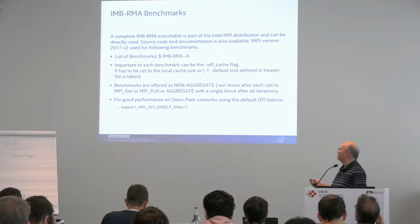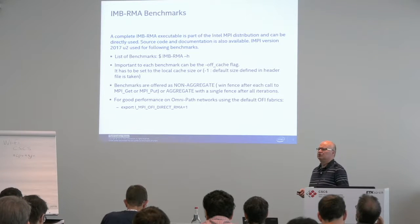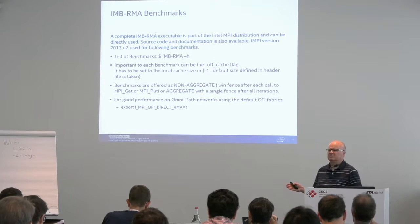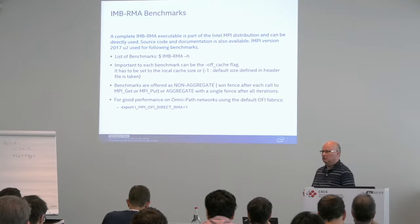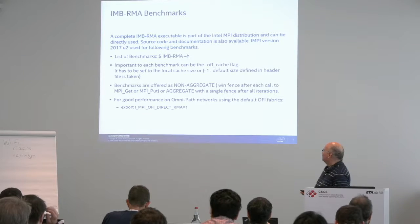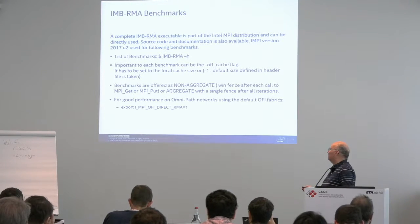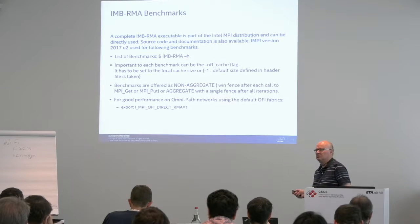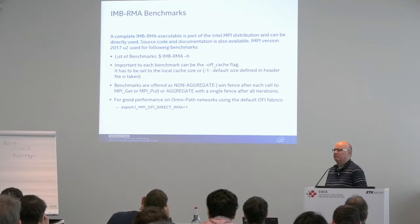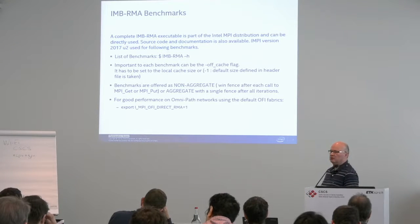Benchmarks are offered as non-aggregate, meaning there is a win fence after each MPI put or get to finish it. In contrast, aggregate measurements have the win fence only at the very end, so you continuously write into non-overlapping moving positions in a buffer and place a win fence at the end to finish all iterations and communication. Of course this is much faster and has much better bandwidth, and you can see what the difference is between using an aggregate approach versus putting a fence after each call.